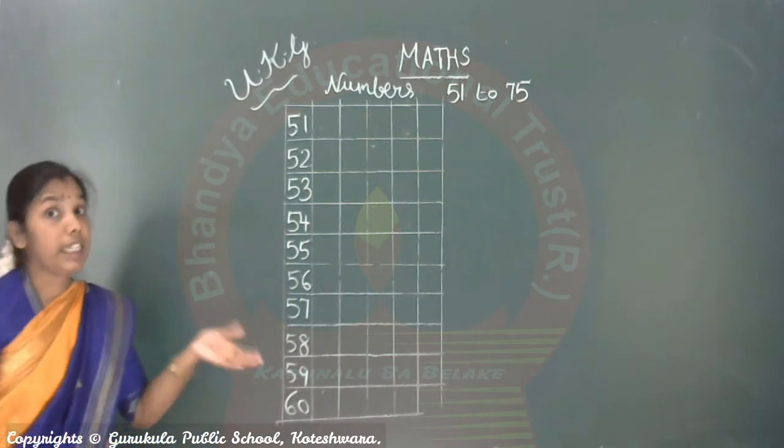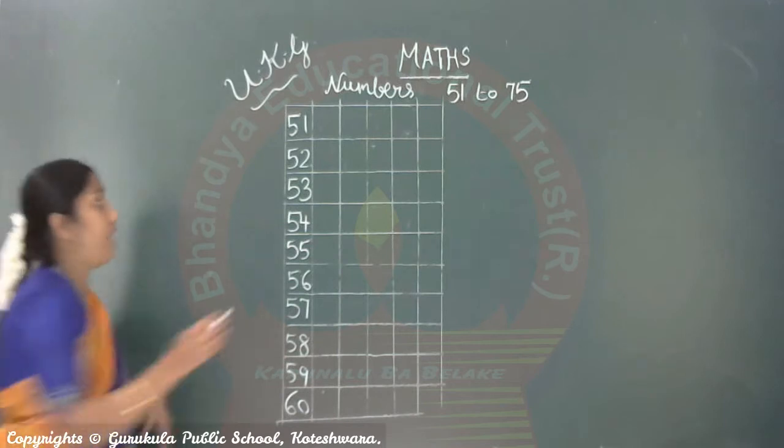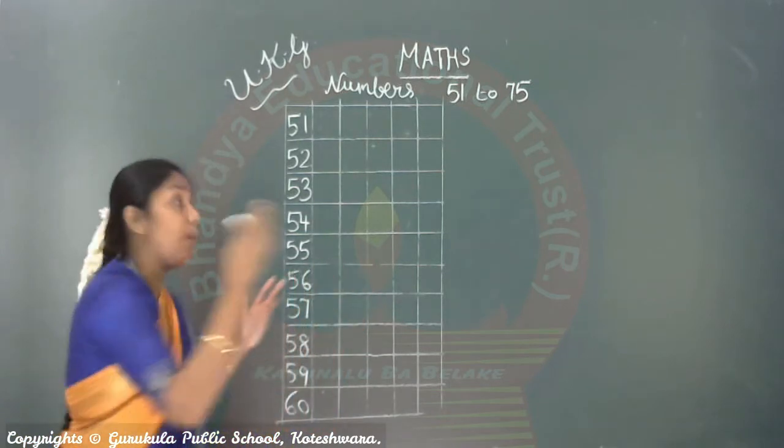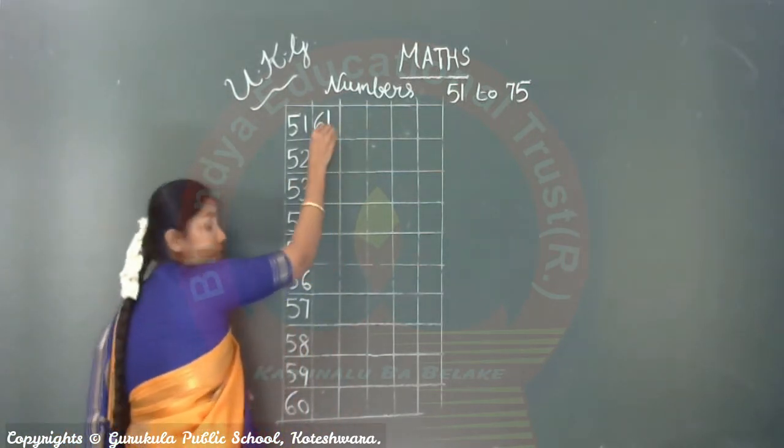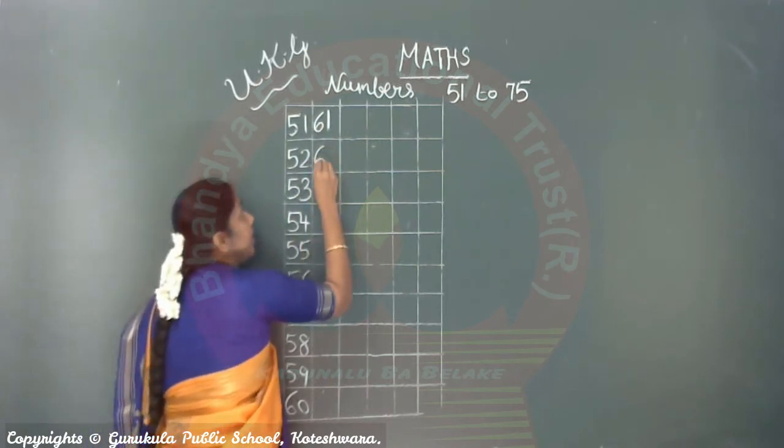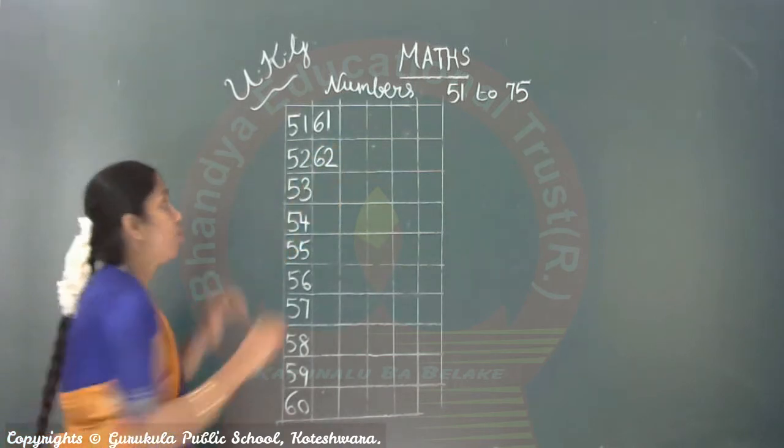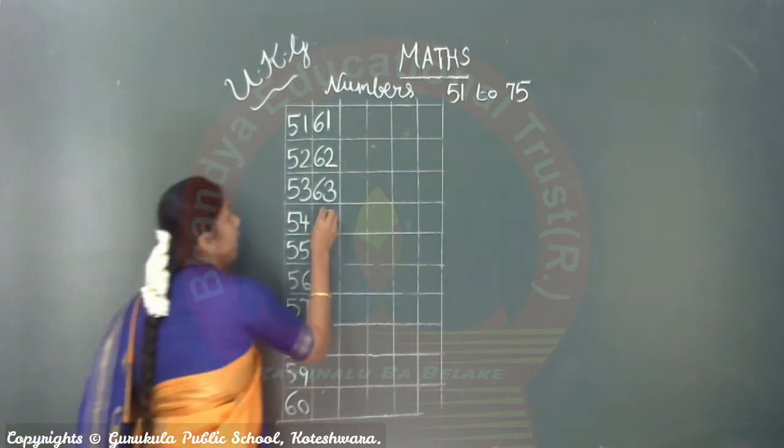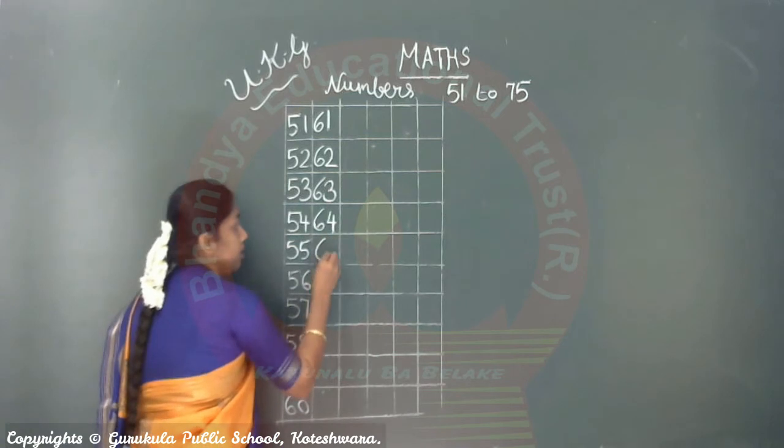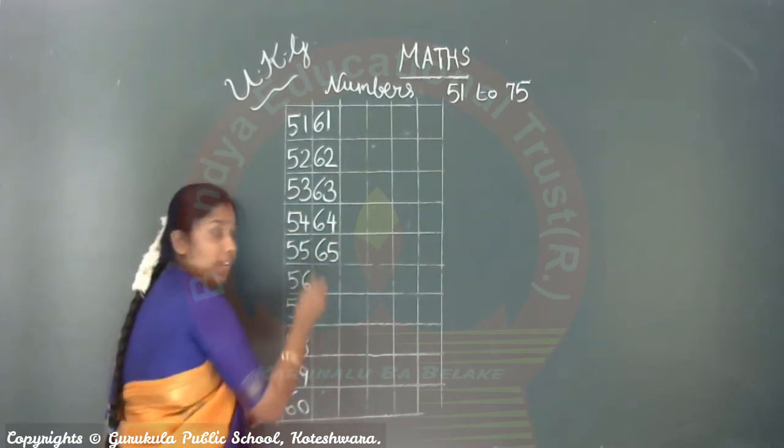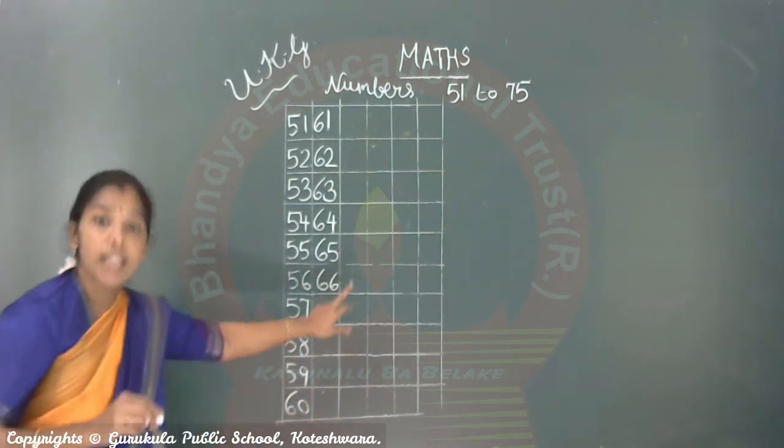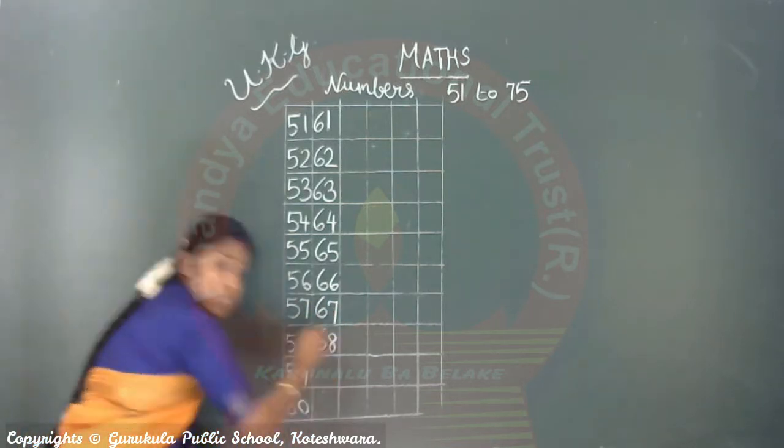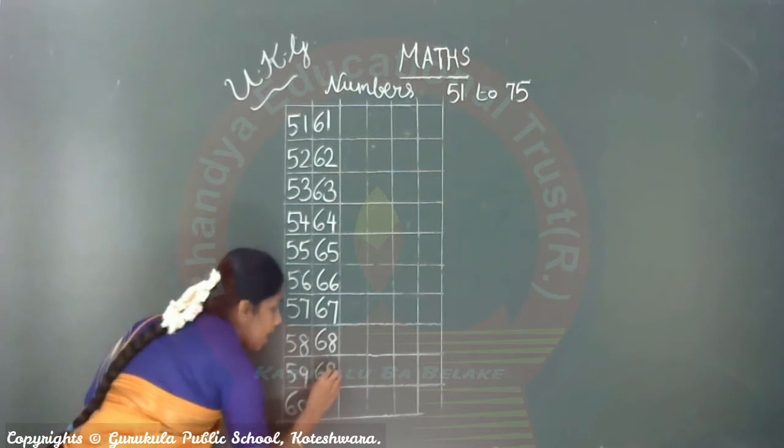After 60, this is the next number. How will you start? 61. Okay, you have to go 61. How will you write 61? 6 and 1. 6 and 1, they come 61. Then 62. Then comes 63. 6 and 3 is 63. 64, 65, 66, 67, then 68, next 69. And then what will be the next number?